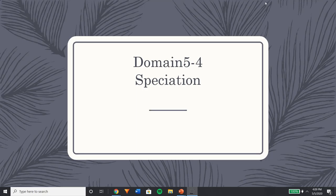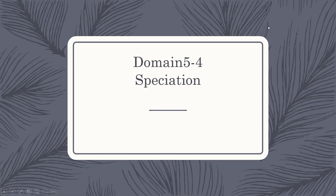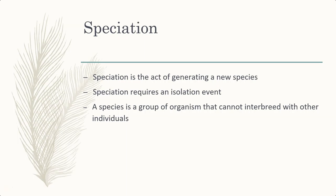Hey everyone, Mr. Jennings here, and today we're going to talk about speciation. Despite writing the book titled On the Origin of Species, Charles Darwin did not really get into the origin of species — he did not get into the idea of how species form. That's called speciation: the act of generating a new species.